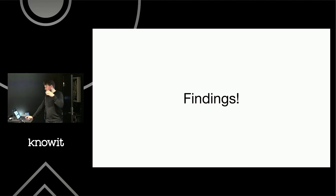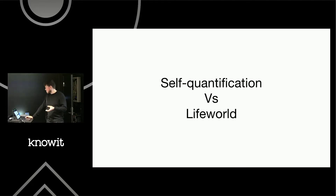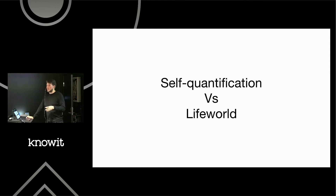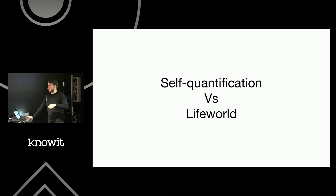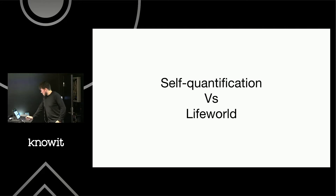Before the findings, I need to quickly introduce two theoretical concepts that were important. There's a conflict between them. Self-quantification basically tells you: track more data, it's good, give it to me — and it will give you feedback. Life-world, on the other hand, focuses on the idea that you are not the data you give to your smart device or activity tracker. Life-world is more about feeling what your body is, not what the phone tells you.